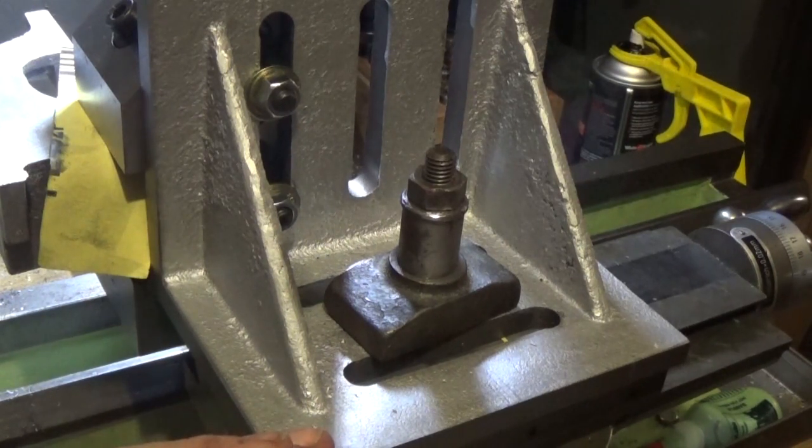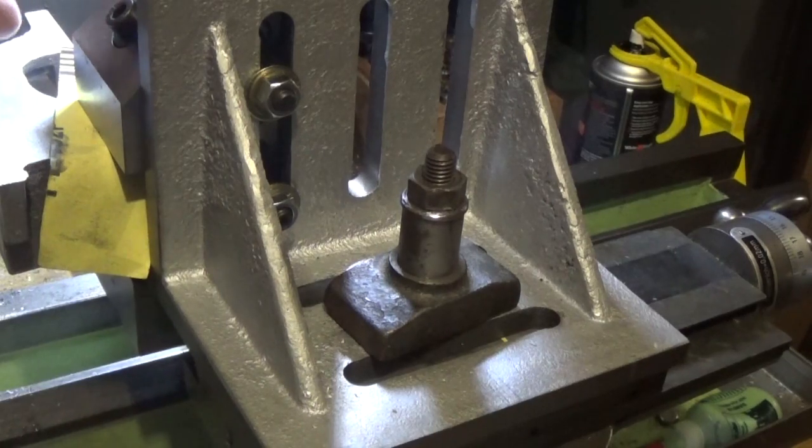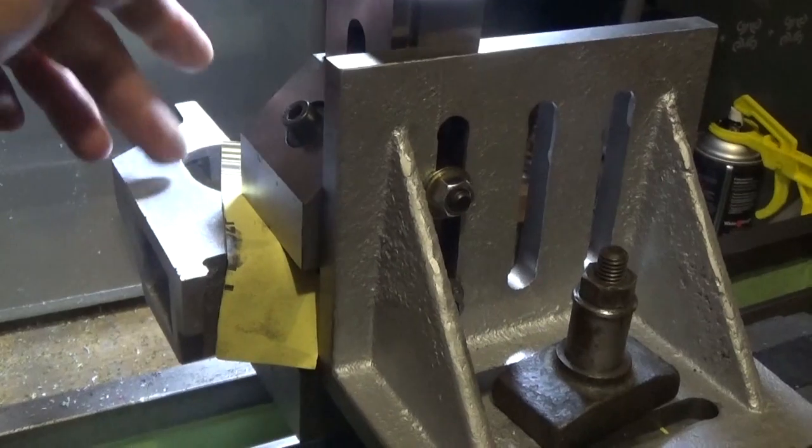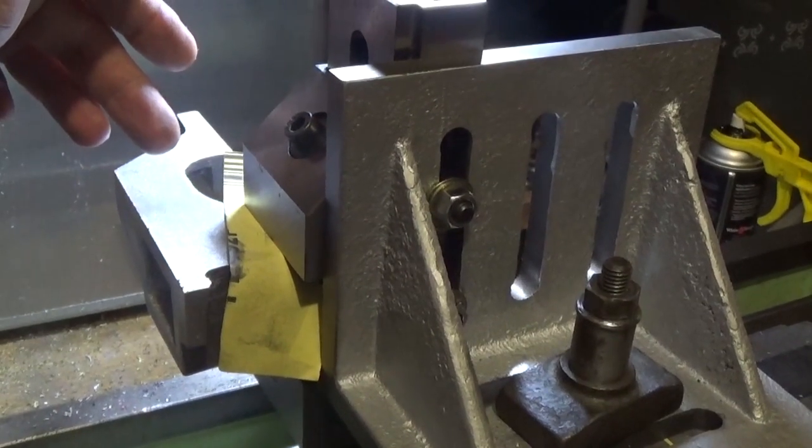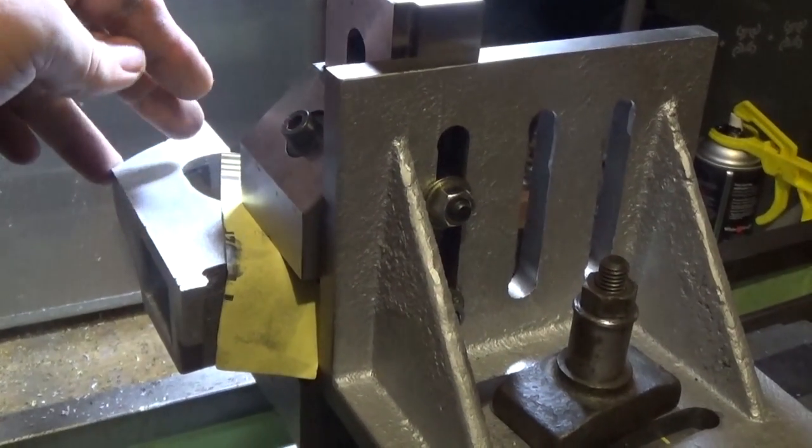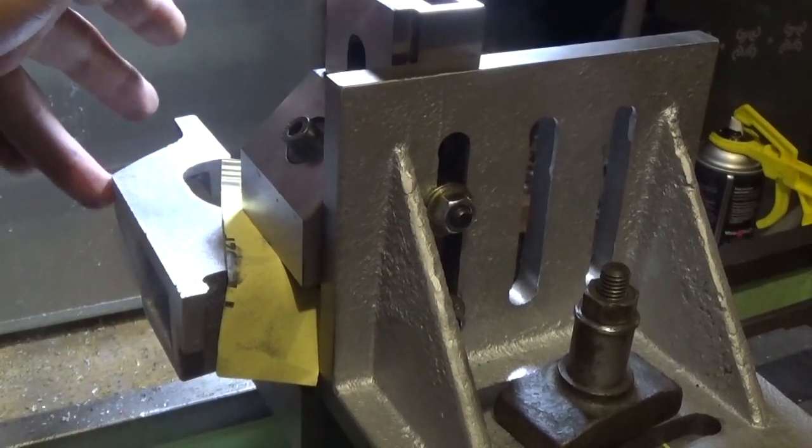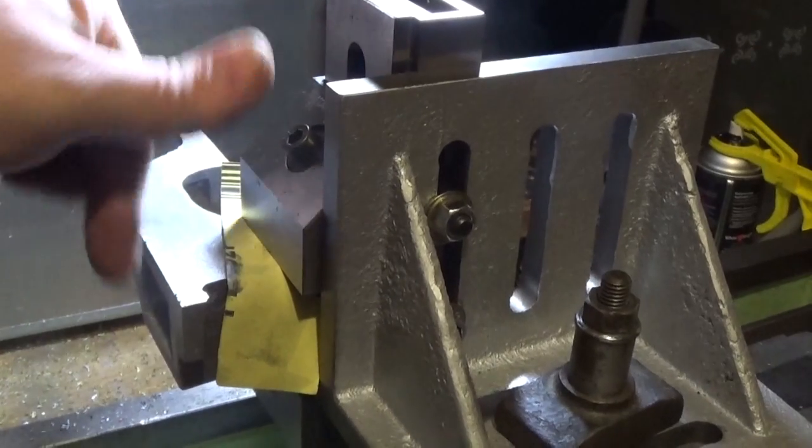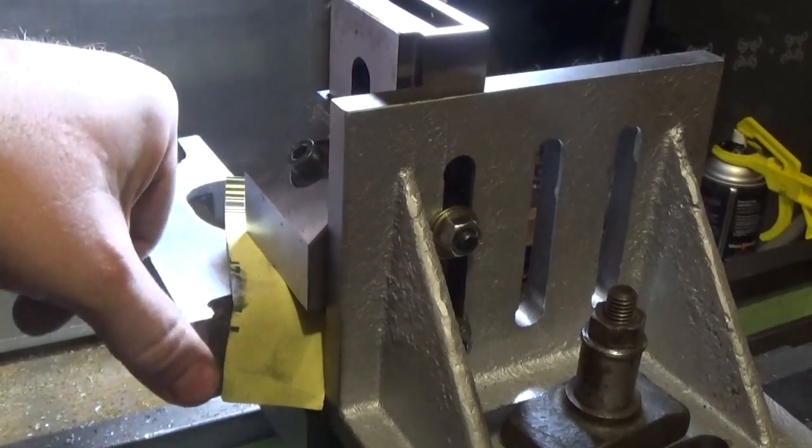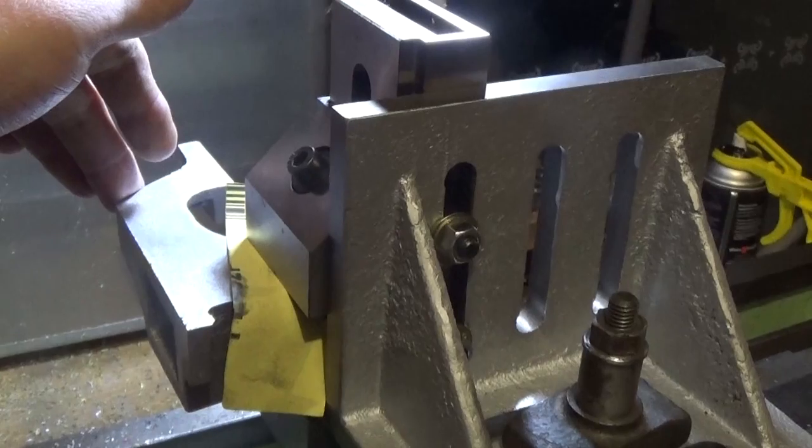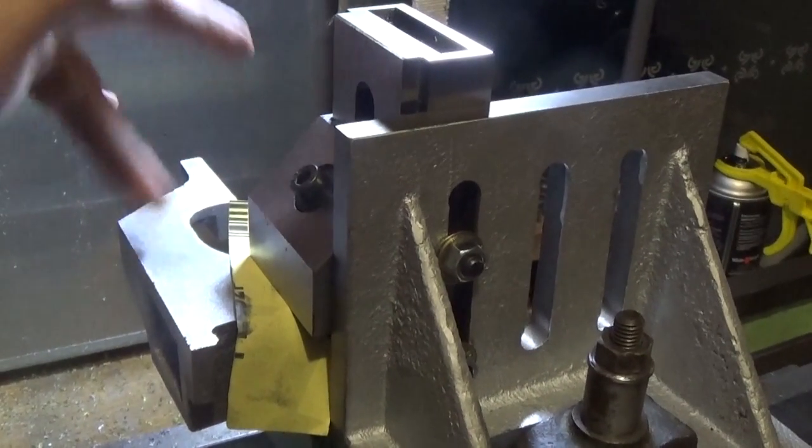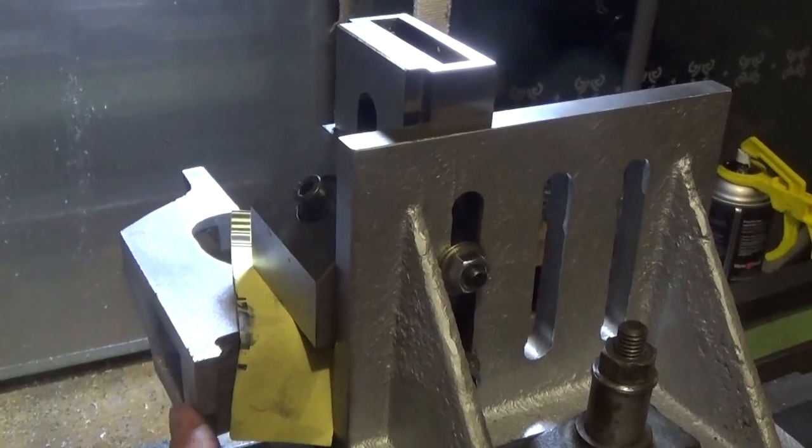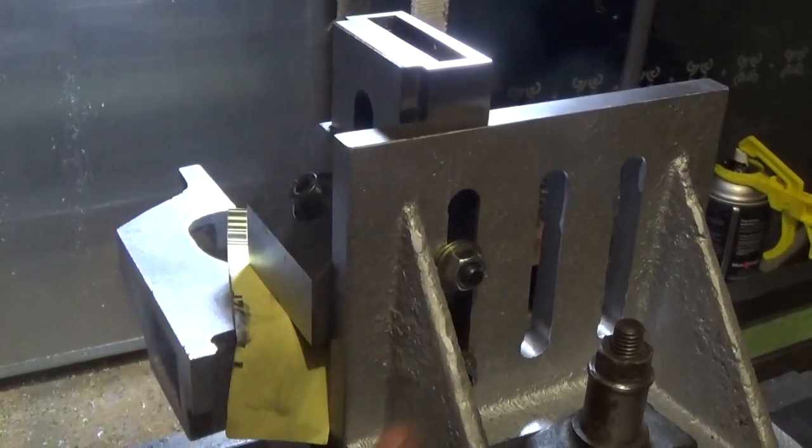And we'll see how that goes. That's pretty much what we're looking at to machine that. Now this is reaching the sort of the limits of this machine as far as travel goes here with the fly cutter. This casting, this is the bottom of the casting and the top of the casting are parallel.